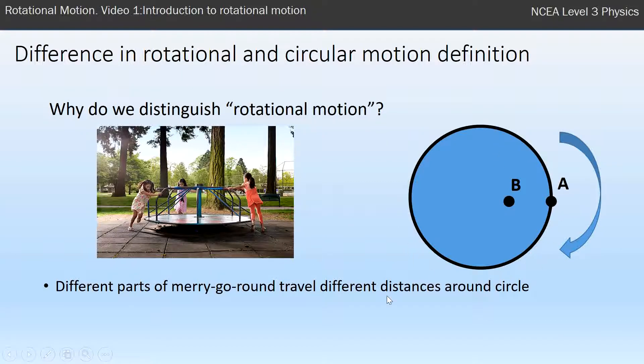These different parts have to travel different distances around the circle. For example, part B travels in a smaller circle because it's closer to the middle, whereas part A travels a larger distance because it's near the outside. So even on the same merry-go-round, different parts travel a different distance as it does a rotation. They both take the same amount of time to do a rotation, so they therefore travel at different speeds.